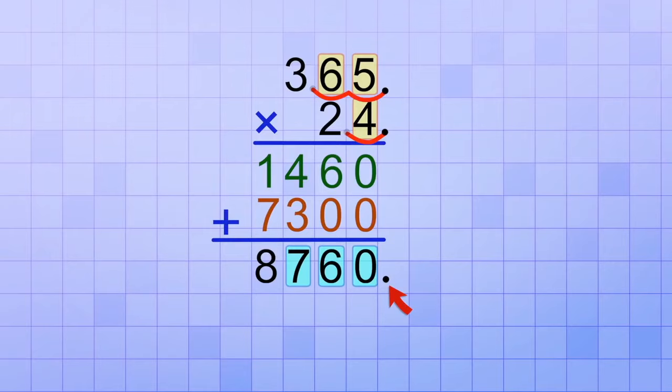we shift it three places to the left, and we end up with 8.760 or just 8.76. And that is the answer to 3.65 times 2.4.